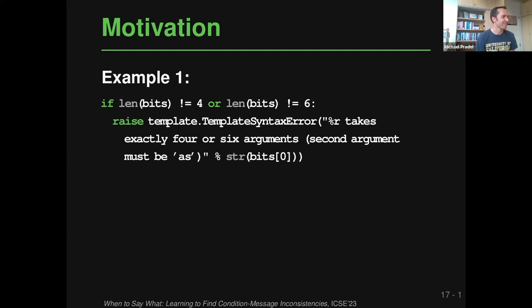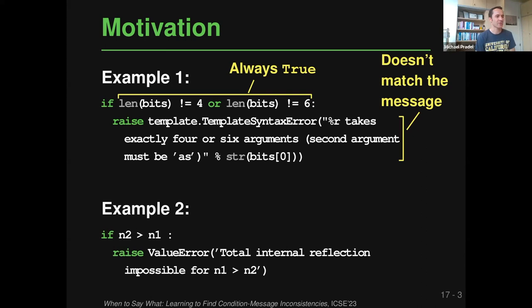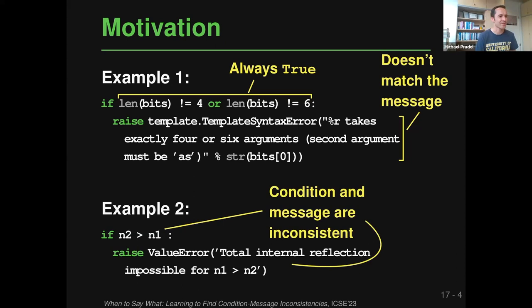The problem is that the condition is always true: the length of 'bits' is either not four OR not six — with an 'or', this always evaluates to true. This means it always raises the exception whenever it reaches that line, which doesn't match the message printed. A second example shows a similar pattern: the condition checks that N2 is larger than N1, but the message says 'N2 is smaller than N1' — the opposite of what is checked. The underlying bug pattern is an inconsistency between the condition and the message emitted when the condition is true.